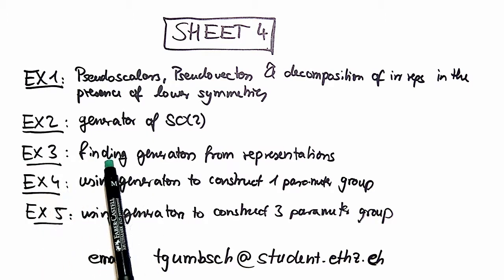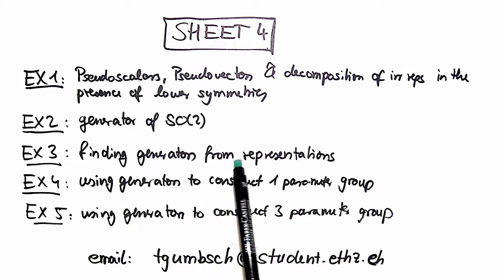Exercise number 3 deals with how to find generators when given representations, and exercise number 4 is how to use those generators to construct your representations. We do that in two different ways and oppose those two different ways against each other.